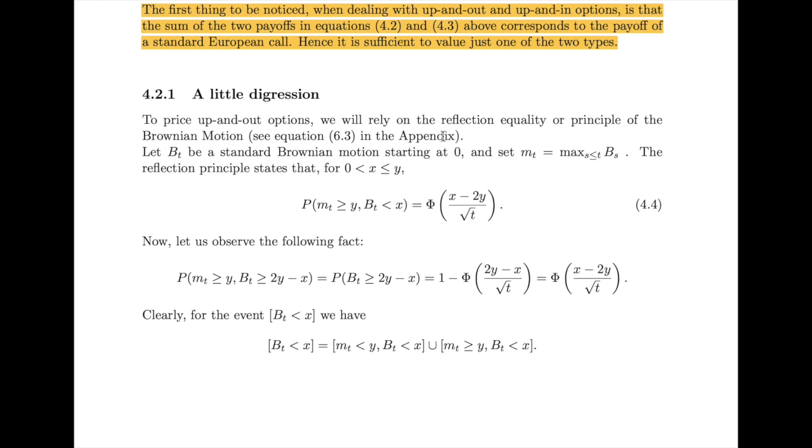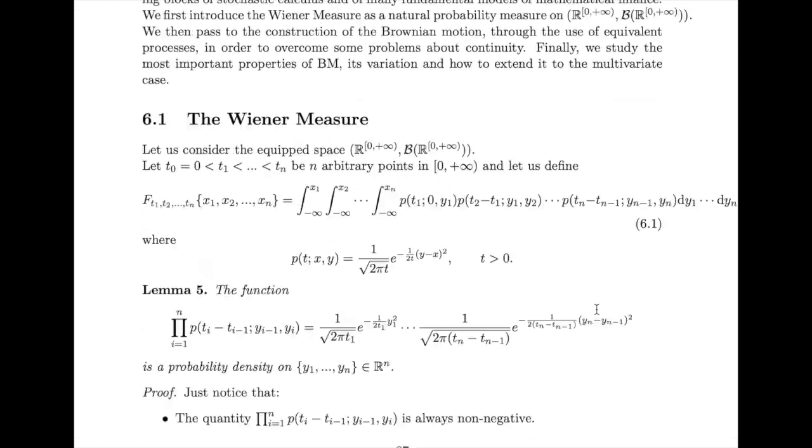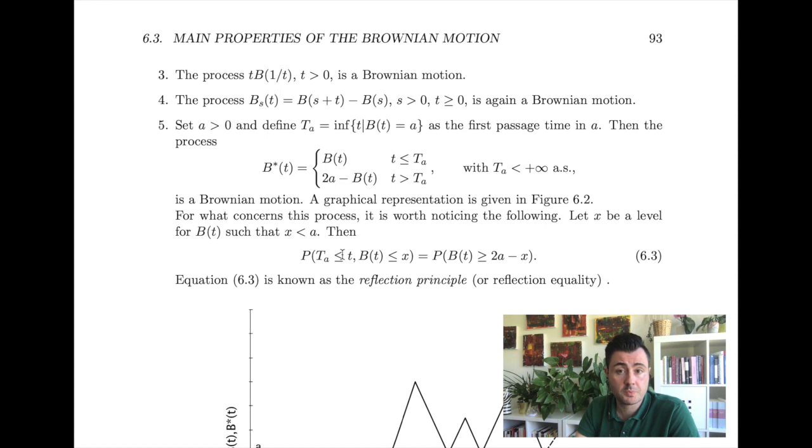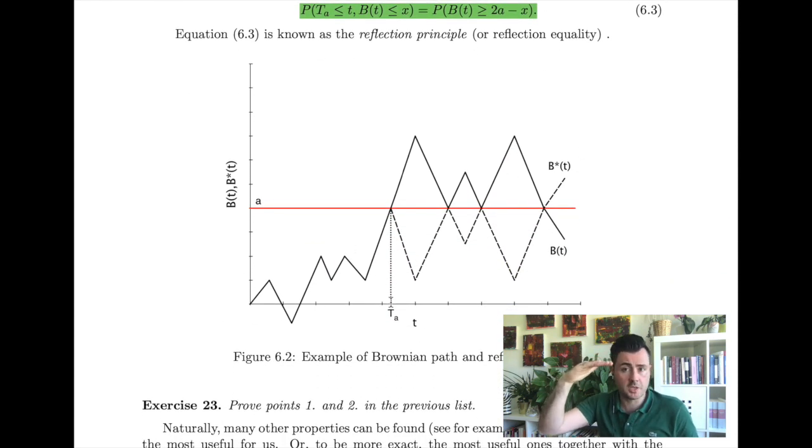As I already told you, in order to price a knockout option, we will make use of the properties of the maximum of the Brownian motion and the so-called reflection principle. The idea of the reflection principle is very simple. We have a Brownian motion, we have a standard Brownian motion, and at a certain point we fix a threshold. Now this threshold works like a mirror. If the Brownian motion is below the threshold, nothing happens, but as soon as the Brownian motion touches the threshold or overpasses the threshold, then we create a second Brownian motion, which is the mirroring process of the original one. So if our process goes up, the other one will go down. If it goes down, the other one will go up, and so on. So what we have is that this new mirroring process is itself a Brownian motion. And this second process is extremely useful to study the behavior of the max-to-date of a Brownian motion.